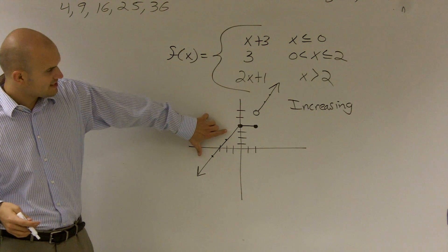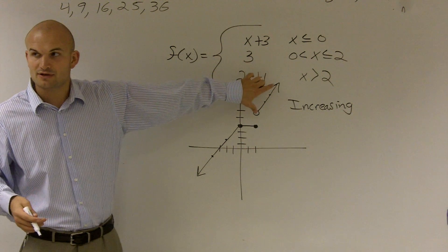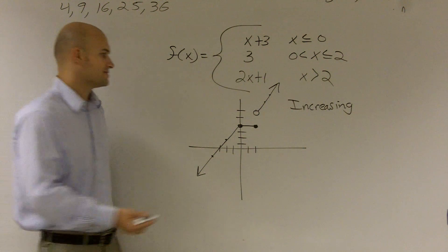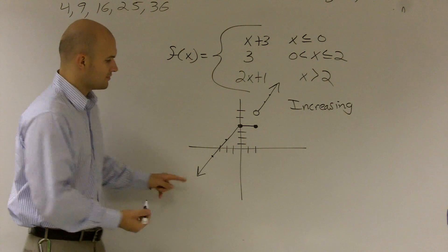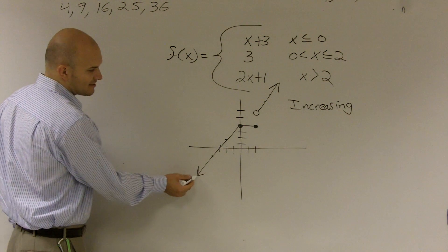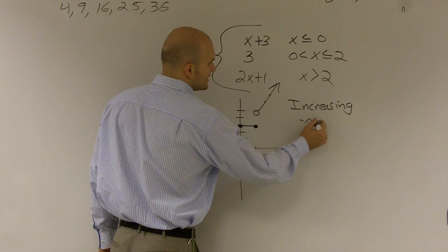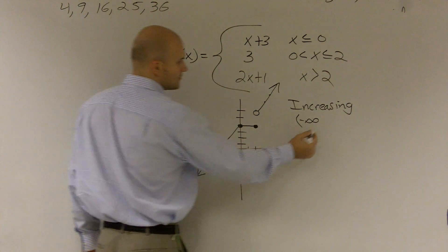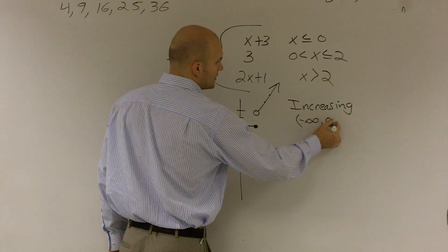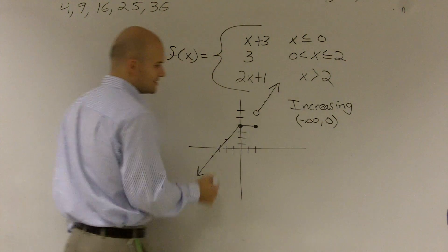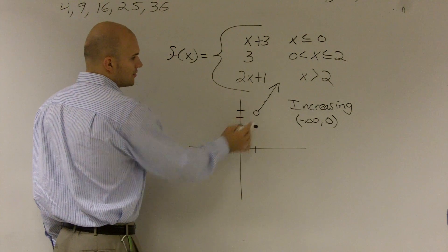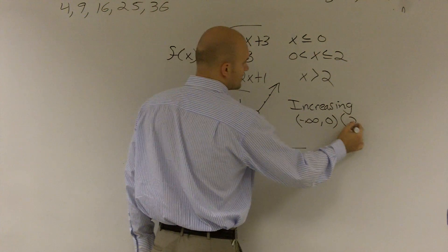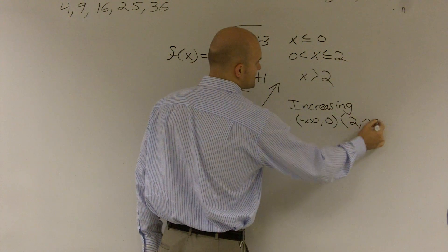So this section is increasing, and this section is increasing. All we need to write is between what intervals. This goes down to negative infinity, so we say negative infinity to 0 the graph is increasing. And then also from 2 to infinity, the graph is increasing.